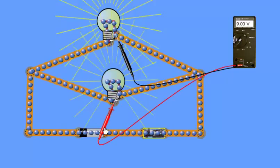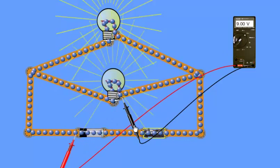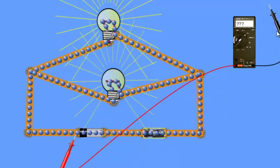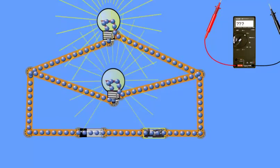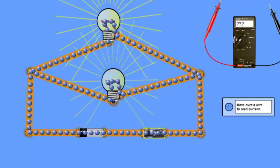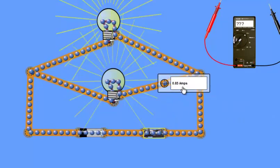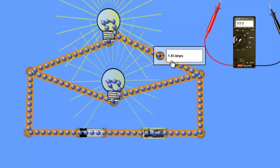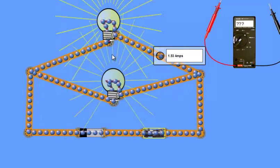Measuring the voltage across the first bulb shows 9 volts. Measuring the potential difference across the second bulb also shows 9 volts, and across the battery it is also 9 volts. Now measuring the current: here it is 2.38 amperes, here it is 0.85 amperes, and here it is 1.53 amperes.